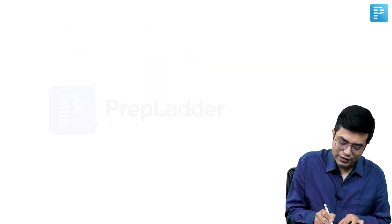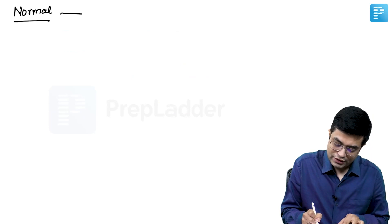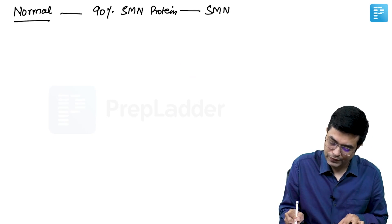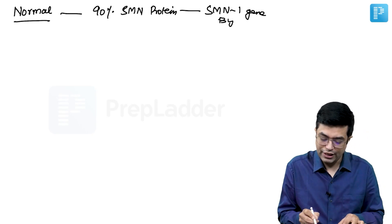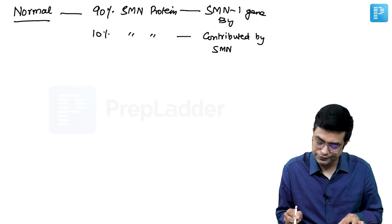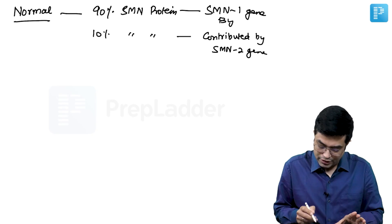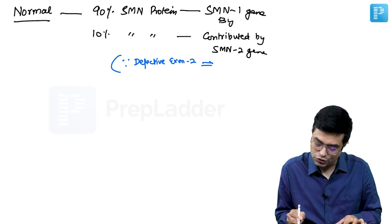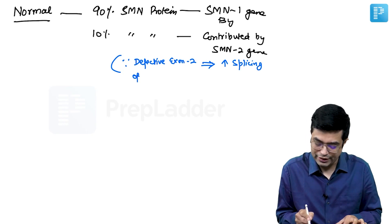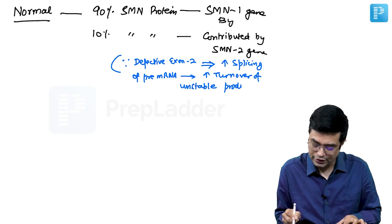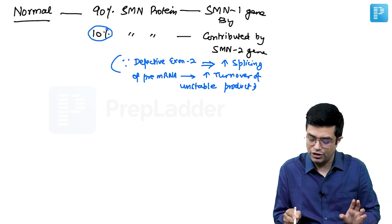What normally happens is, to summarize, if I have to summarize, in a normal person, that is you and me, almost 90% of SMN protein is coded by SMN1 gene. And only about 10% of SMN protein is contributed by SMN2 gene. Normal persons. Why? Because defective exon 7 is there in SMN2, which leads to increased splicing of pre-mRNA in these patients, leading to increased turnover of unstable product. What we find is only 10% of the protein, maximum up to 10% is contributed by SMN2.